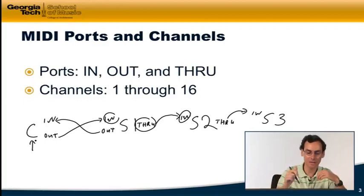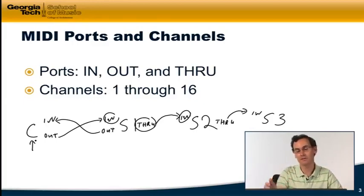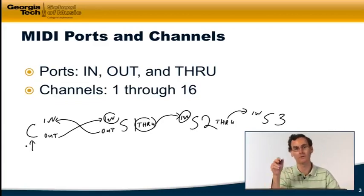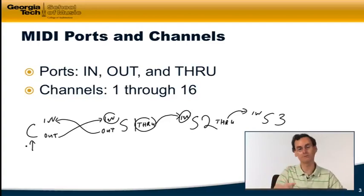So if I set up S1 to respond, say, on channel 1 and S2 to respond on channel 2 and S3 to respond on channel 3, then whenever I send on channel 1 from my controller, I know I'll only be controlling S1. S2 and S3 will receive the messages but they'll ignore them. And same thing when I send on channel 2, only S2 will be responding, and so on and so forth. Because I'm mapping these channels to different devices.